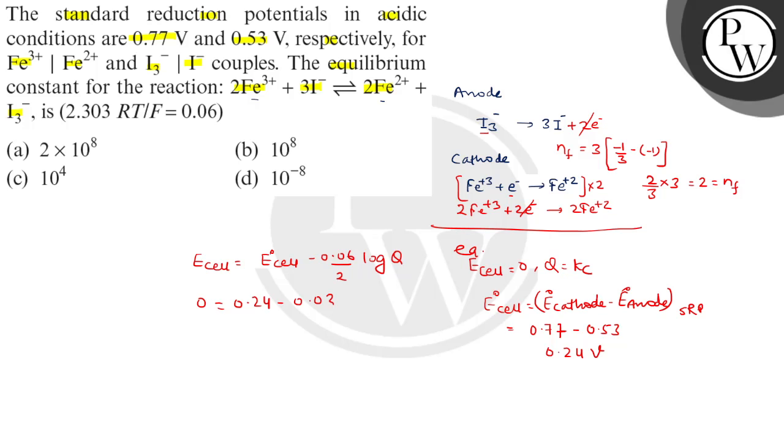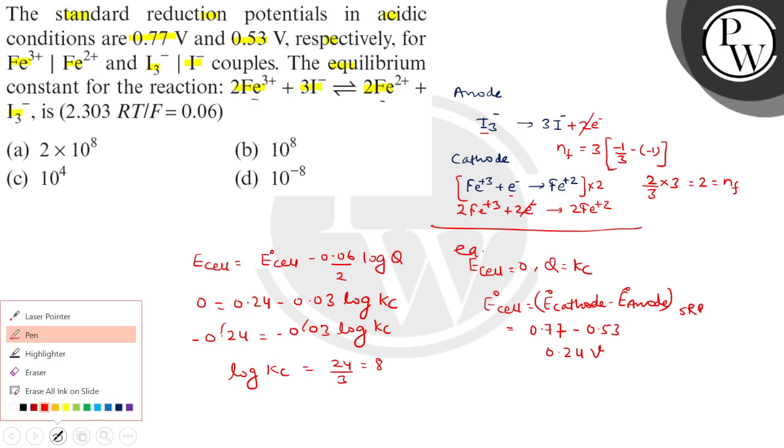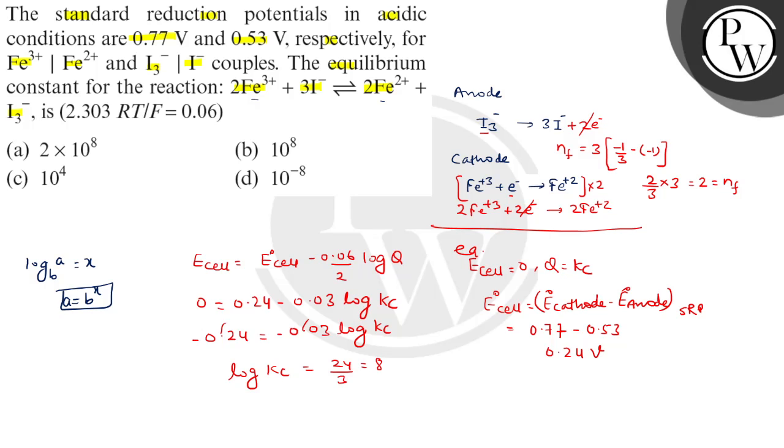So 0 equals 0.24 minus 0.03 log Kc. Moving this over, we get 0.24 equals 0.03 log Kc. The negatives cancel. Using logarithm properties, if log base B of A equals X, then A equals B to the power X. Here the base is 10.